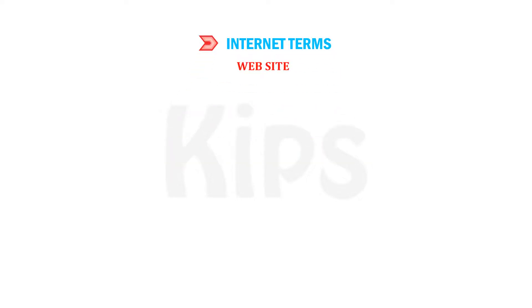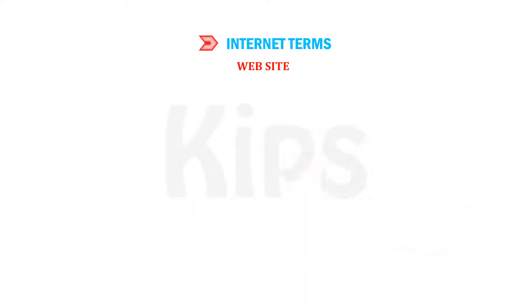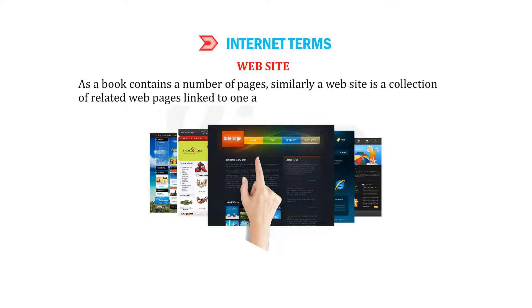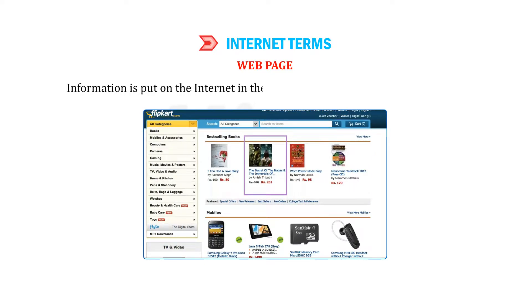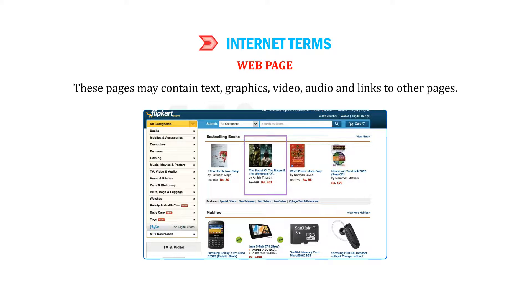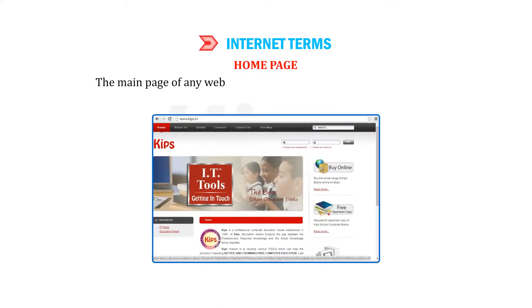Website: The information available on the internet is contained in websites and on web pages. Just as a book contains a number of pages, similarly a website is a collection of related web pages linked to one another. Web page: Information is put on the internet in the form of digital pages called web pages. These pages may contain text, graphics, video, audio, and links to other pages.